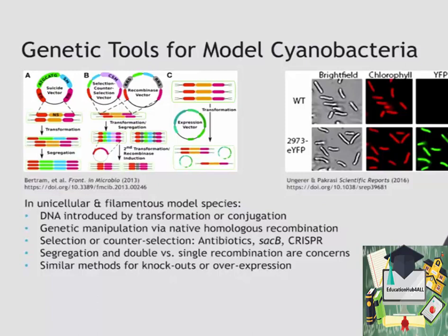We then apply selection mechanisms for a selection marker — the SM in part A — which is most often an antibiotic resistance marker, to then segregate. The reason we have to do segregation is because most often cyanobacteria are polyploid, meaning they have multiple copies of the genome within a single cell, so we need all copies to change over. Another concern is double versus single recombination: double as in figure A completely replaces the DNA, while single means the whole vector goes in without replacing anything.